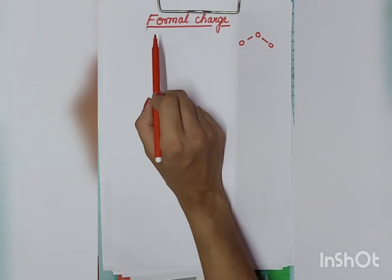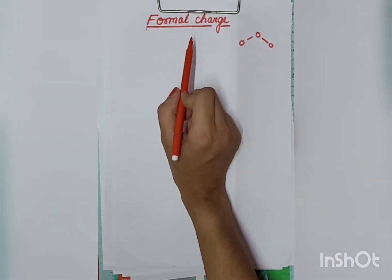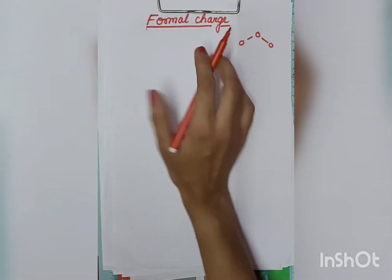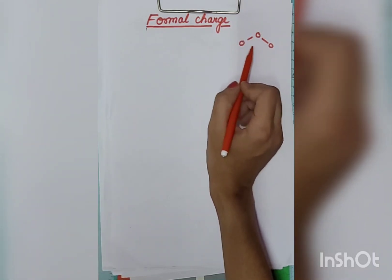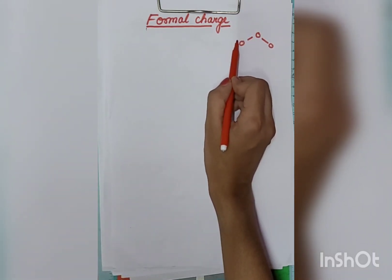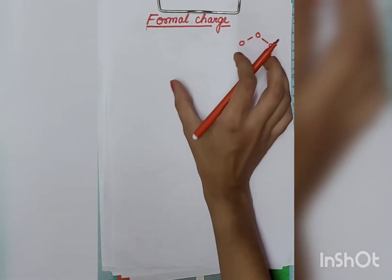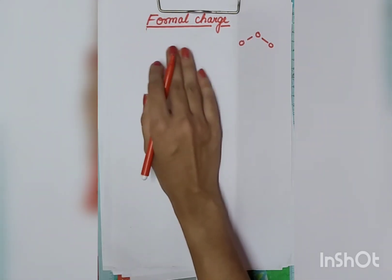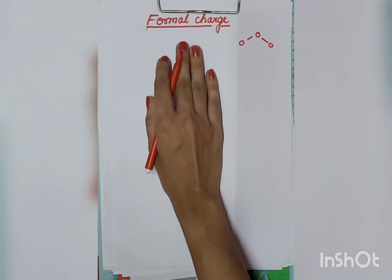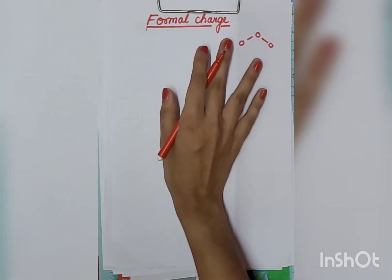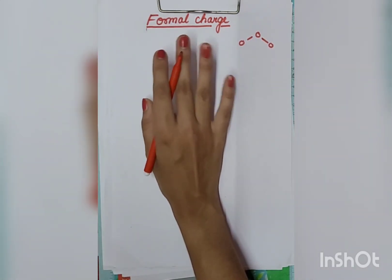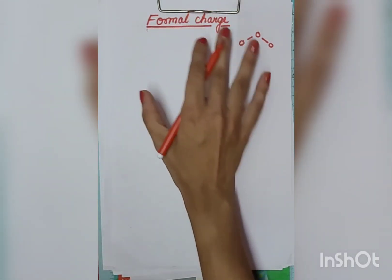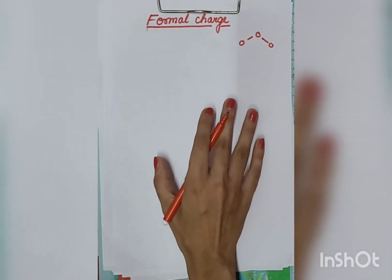Hi guys! In this video, we will learn formal charge. Formal charge means — if we take ozone, how much charge is on each atom — that is the formal charge. But first of all, you need to make a Lewis dot structure. So we will make a Lewis dot structure first, and then we will calculate the formal charge.